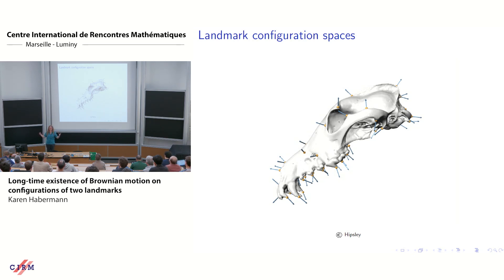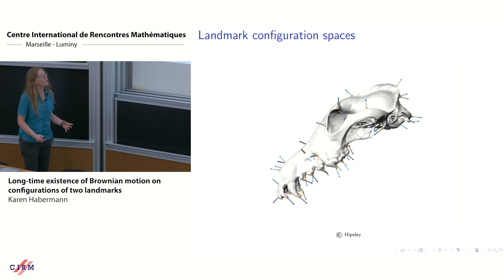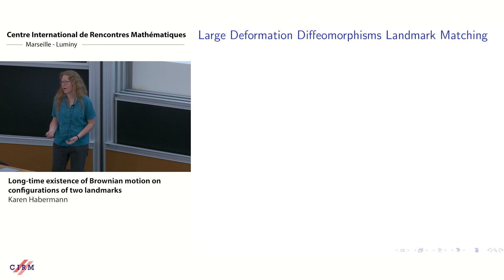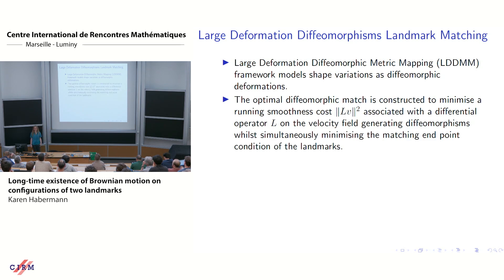What we care about is comparing these point clouds. We may want to understand how close one point cloud is to another, or how one point cloud can stochastically evolve into another. A very effective mechanism is the large deformation diffeomorphism landmark matching (LDDMM) approach: you apply a diffeomorphism to your space R^d and evolve through a family of diffeomorphisms into the target point cloud.